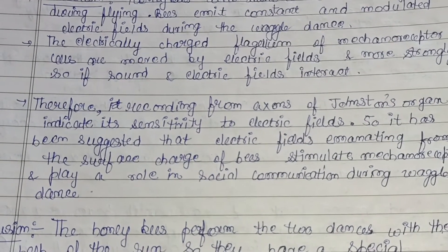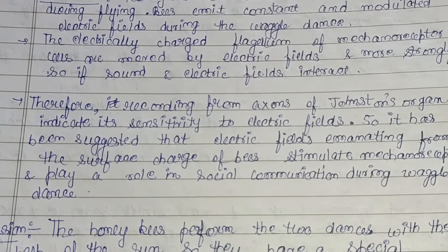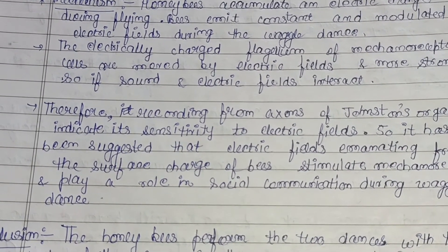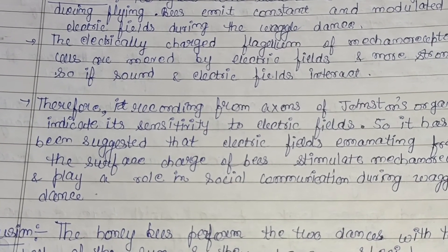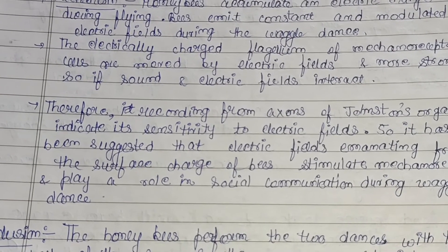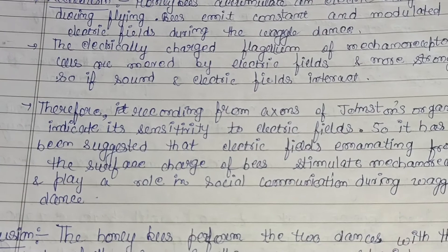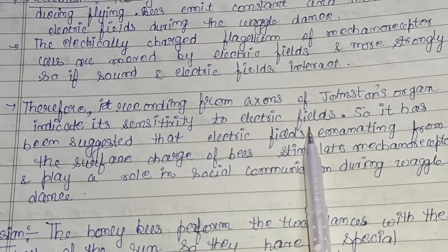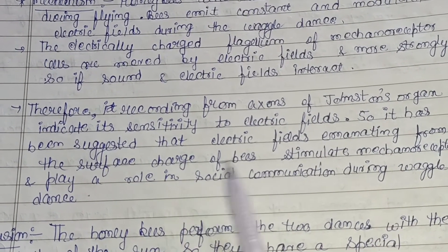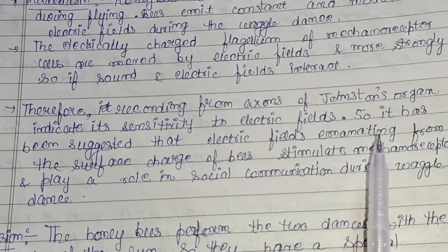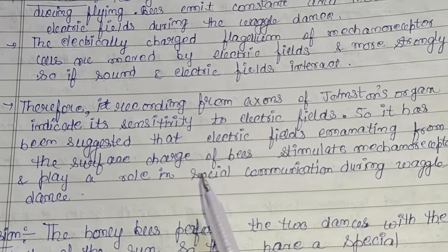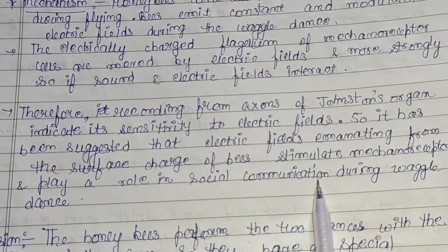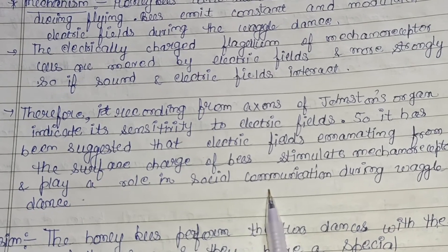Recordings from the axons of the Johnston's organ reveal its role in this process. The Johnston's organ is a collection of sensory cells found in the pedicel — the second segment of the antennae in the class Insecta — and it detects motion in the flagellum, which is the third and final antennal segment. It has been suggested that electric fields from the surface charge of the bees stimulate these mechanoreceptors and play a role in social communication during the waggle dance.